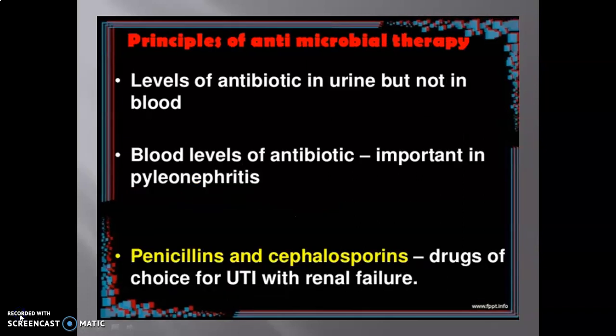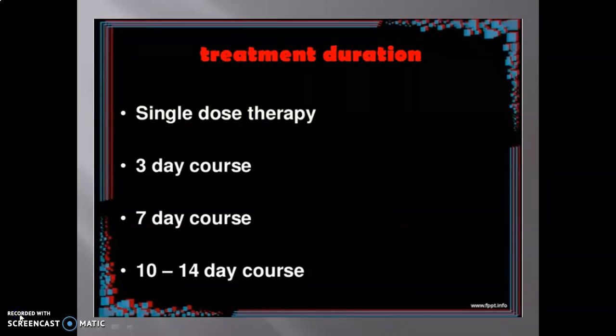The principles of antimicrobial therapy focus on the level of antibiotic in urine rather than blood, though blood levels are important in pyelonephritis. Penicillin and cephalosporin are the drugs of choice for UTI with renal failure. Treatment duration options include single dose therapy, three-day course, seven-day course, and 10–14 day course.